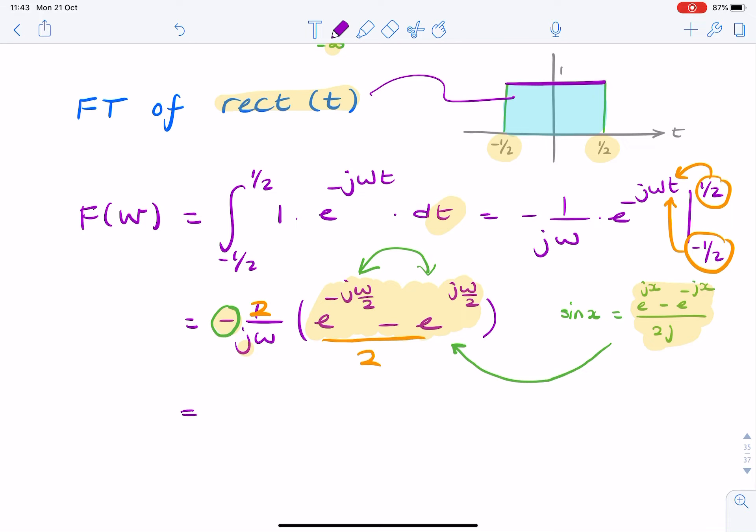So now what I have is 2 over omega multiplied by sine omega over 2, which is the same as saying sine omega over 2 divided by omega over 2.